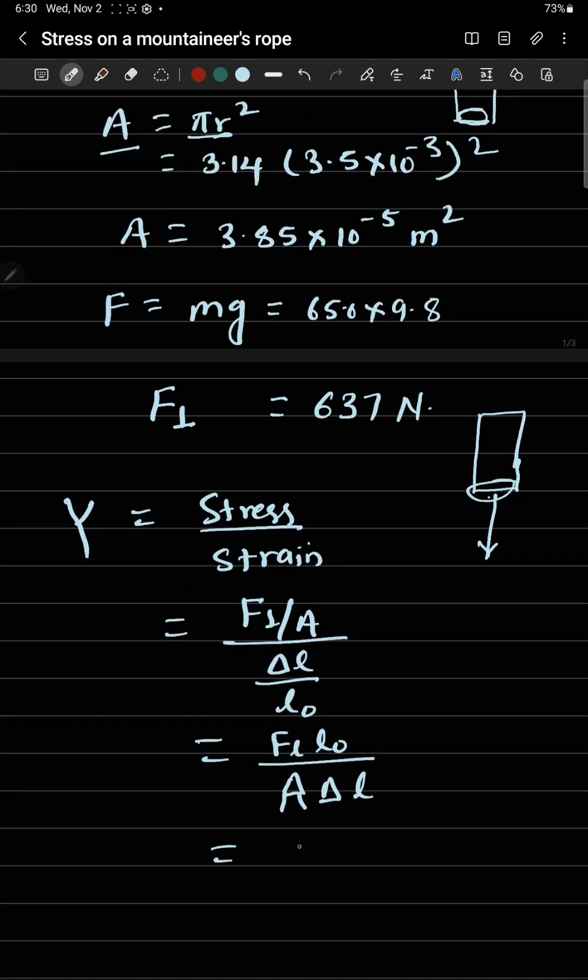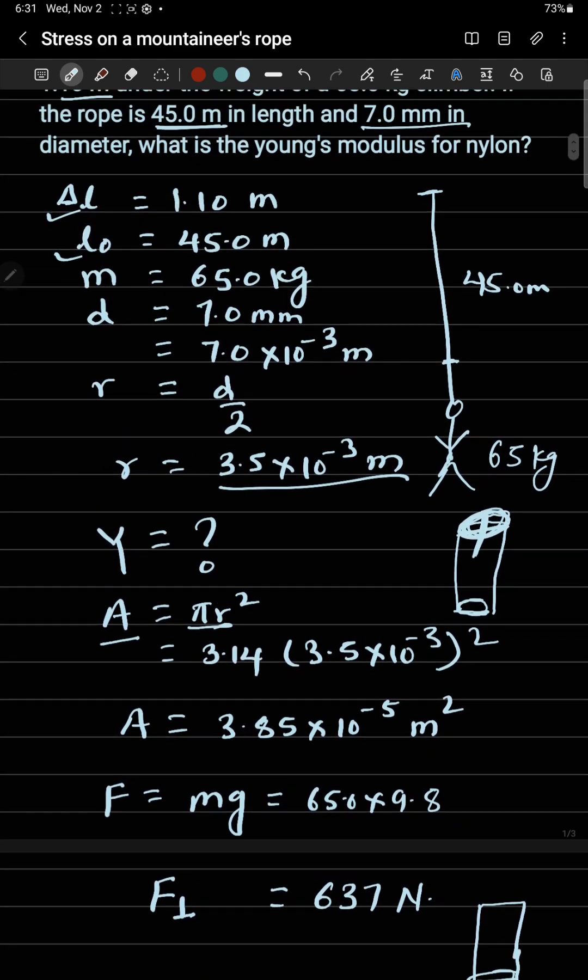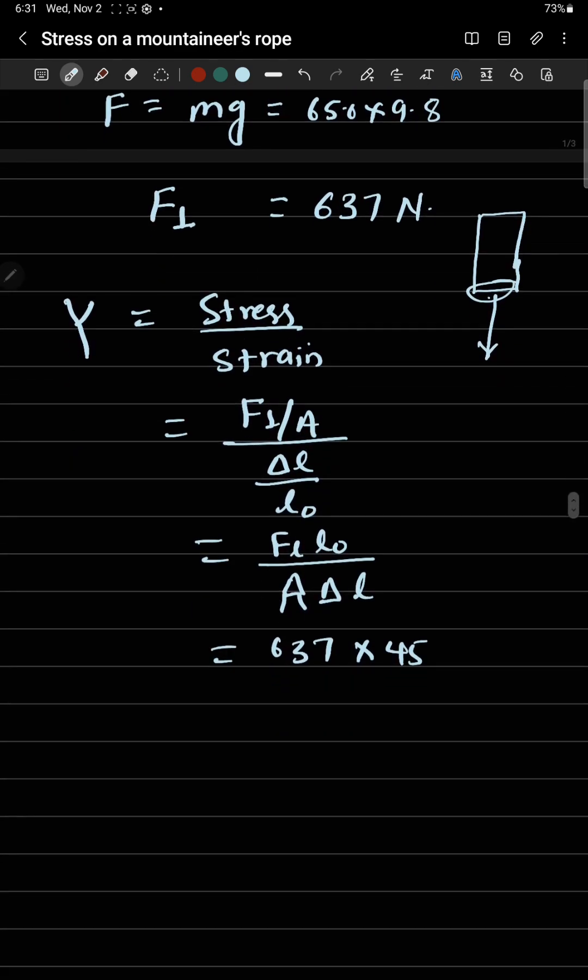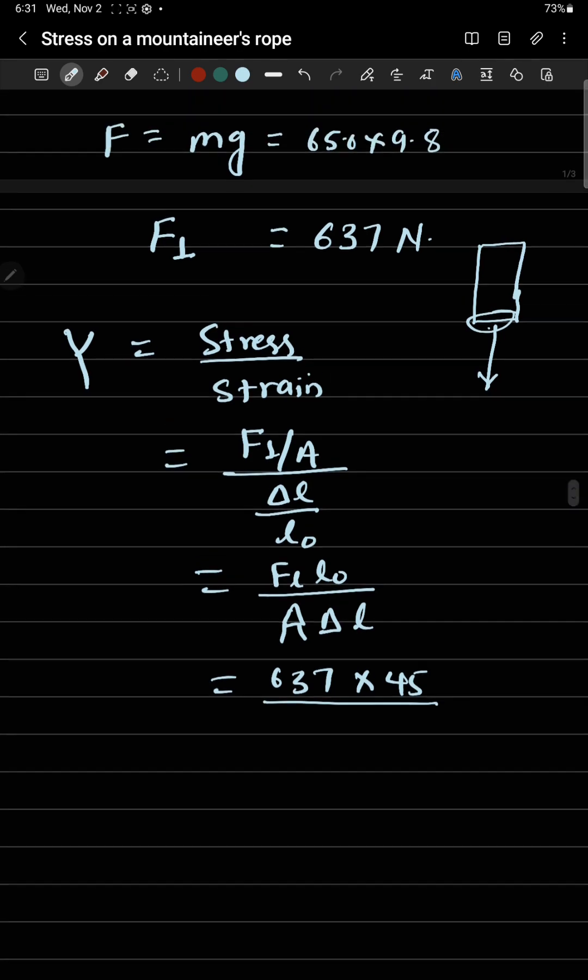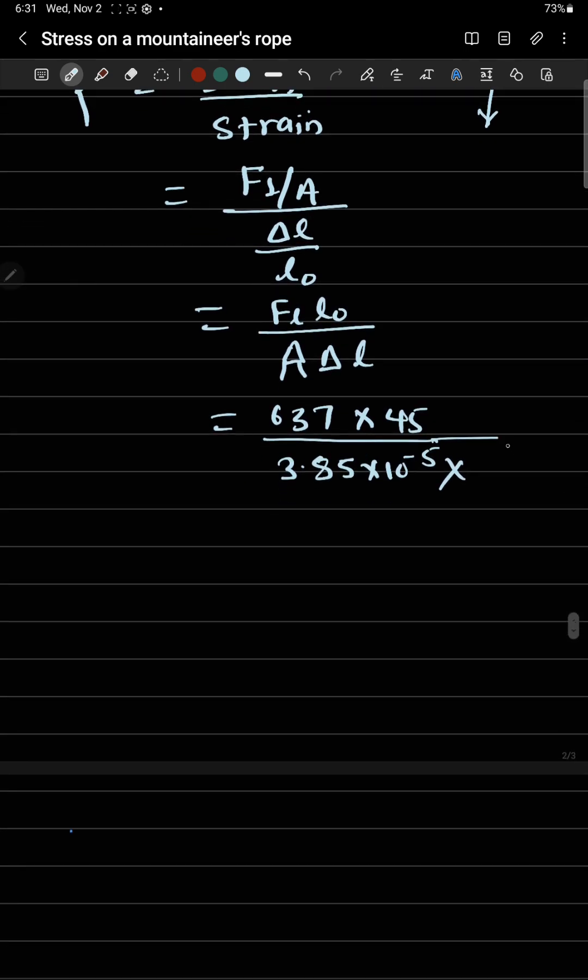Bringing all values into this equation: 637, and then the length of the rope is 45 meters, the original length of this string was 45, divided by the area which I just got, 3.85 times 10 to the power negative 5, and then there is change in length which is 1.10 meters.